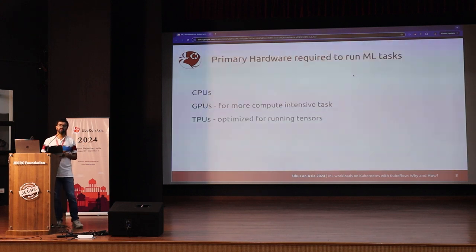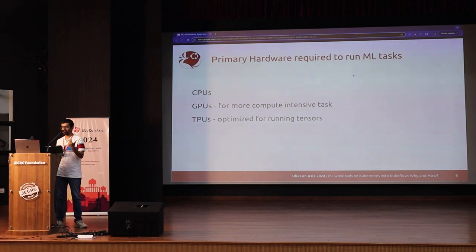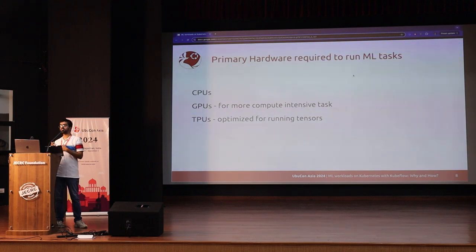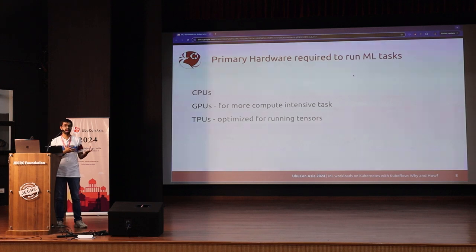Whenever we talk about machine learning, there are three categories of primary hardware required to run machine learning workloads, starting with CPUs. If you have smaller models, you can leverage a CPU. But for larger models, you'll need more specialized hardware that can do more mathematical computations per second. That's why GPUs — graphical processing units — or TPUs — tensor processing units — which are specialized hardware for machine learning calculations, are recommended for running much larger models.